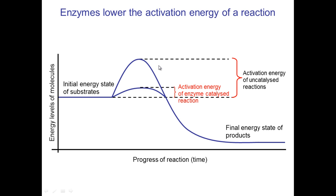Generally speaking, to get the activation energy up to the required level without an enzyme, you need to heat the reactants to very, very high levels. Whereas with an enzyme-controlled reaction, they do not need to be heated to such an extent, and therefore it lowers the activation energy.